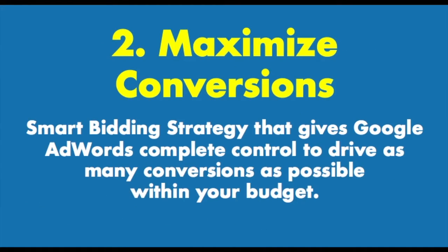The second strategy is maximize conversions — pretty simple. You don't set bids at all. You just set the maximize conversions bidding strategy and Google will try to drive as many conversions as possible within your budget. Generally you'll see a pretty high cost per click because Google is going after searches more likely to convert, which means advertisers are generally bidding higher on them. You can set max bid limits — so you can say I want you to maximize conversions but don't bid more than $5 for a single click.